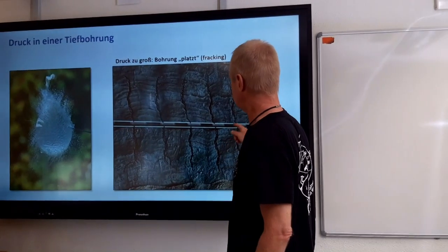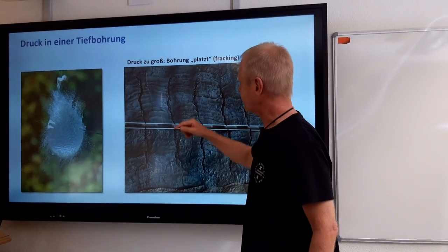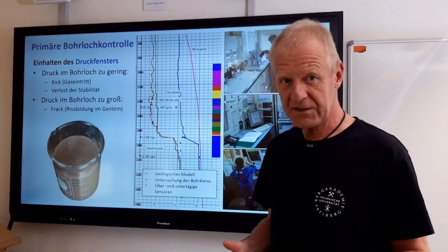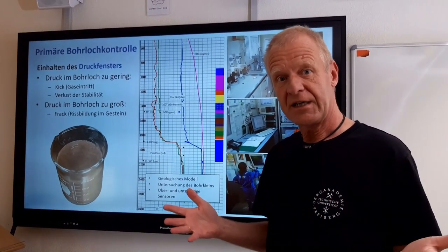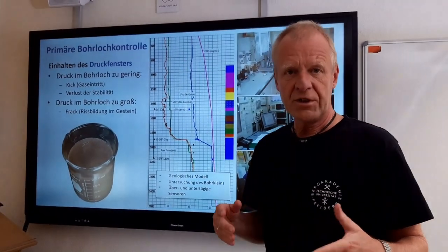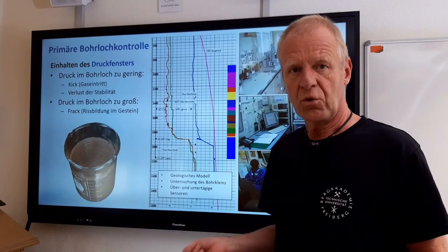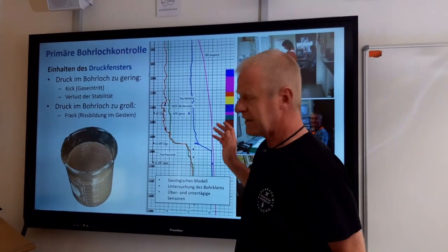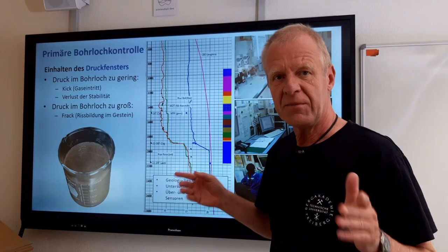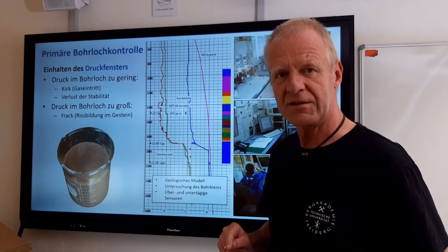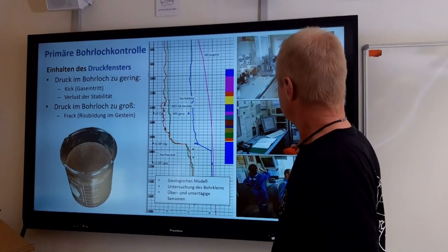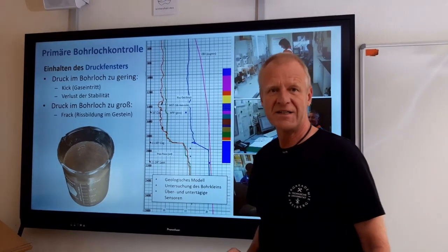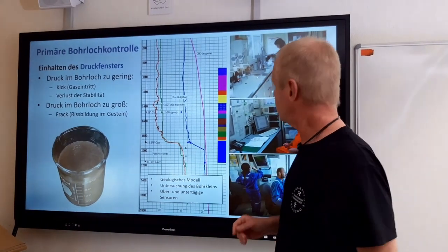So during drilling operations, we need to avoid such type of fracking. If the pressure in the borehole is too small, then gas comes into the hole. And when the pressure is too large, we create a frack. The range between these two extremes is what we call the pressure window of the borehole. In practice, this window can be very tight and small.